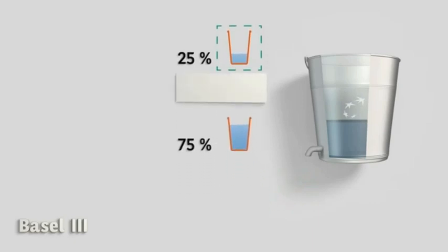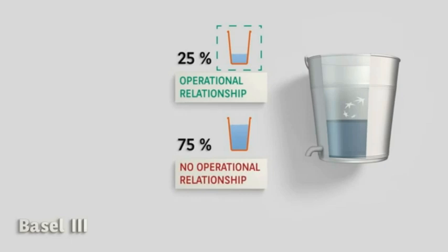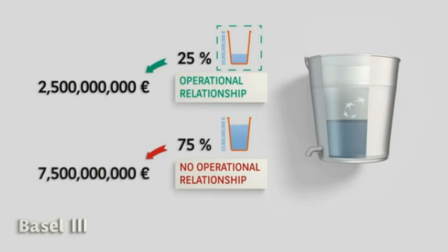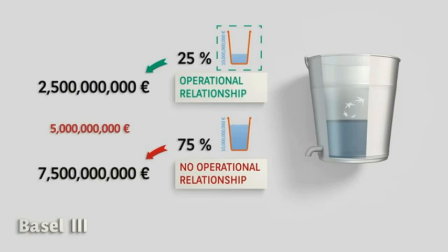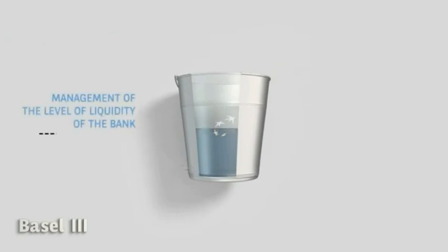25% or 75% of the deposits of corporates will leave, depending on the existence or non-existence of an operational relationship between the bank and the corporate. If a bank has 10 billion in corporate deposits and an operational relationship with these clients, 2.5 billion will be lost. Suppose no operational relationship exists — the bank might even lose 7.5 billion of these deposits. The result is a 5 billion difference in the stress test for Basel III. We will come back to this Basel III tendency to guide banks towards more traditional activities.